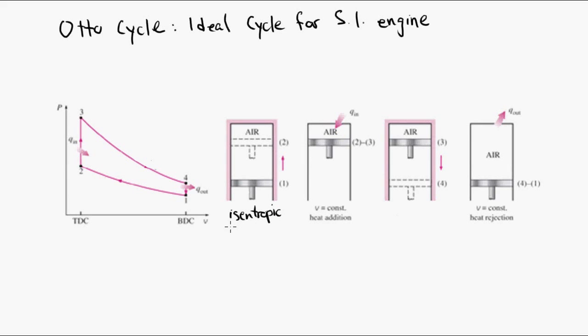We can assume constant or we can assume variable specific heats for the analysis. The four stages of the Otto cycle consist of isentropic compression, constant entropy as the piston moves up and compresses the air in the cylinder. The second stage is heat input. We consider it constant volume heat input, or Q in, that represents the combustion stage.